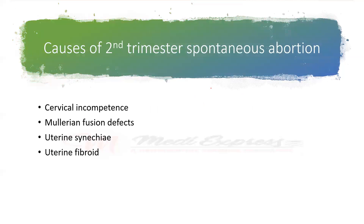The cause of second trimester spontaneous abortion: the first is cervical incompetence. Then we have Müllerian fusion defects like bicornuate or septate uterus. Then we have uterine synechiae, otherwise termed Asherman syndrome. Then we have uterine fibroid.